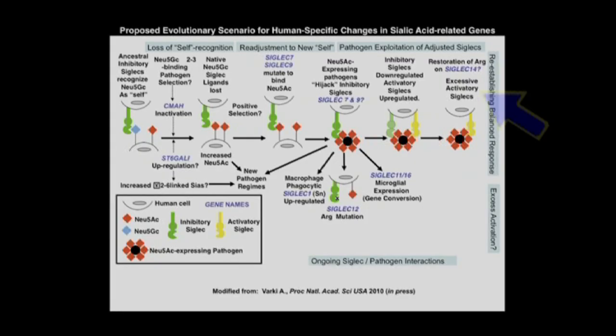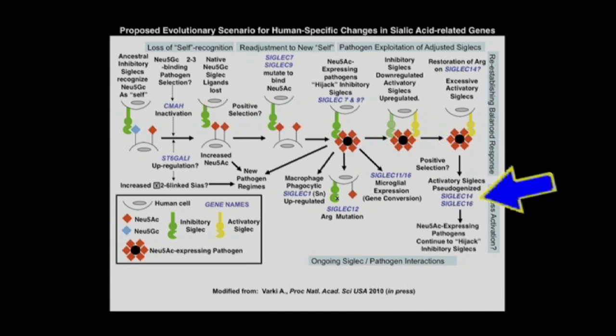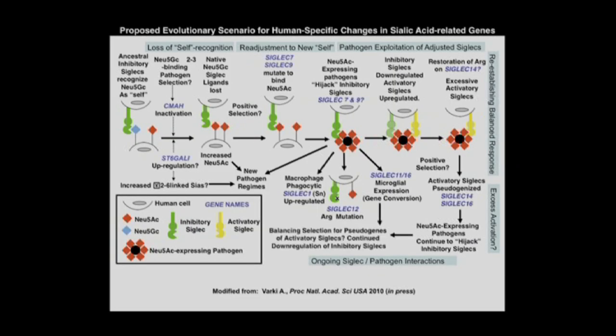But eventually, too much of a good thing is not good in terms of activation — too much activation is going to get you in trouble too. So it turns out that several events have occurred in which humans have lost several of these siglecs. Humans have deleted or partially deleted some — in some cases completely in humans, in other cases some of you have them and some of you don't. We have some relationship to diseases, and we think we're still in the middle of some sort of balancing selection for all these different genes, especially the ones that have changed more recently. They range in expression patterns not only in the immune system, but in the brain, the placenta, the ovary, and other interesting places where humans have unique changes.